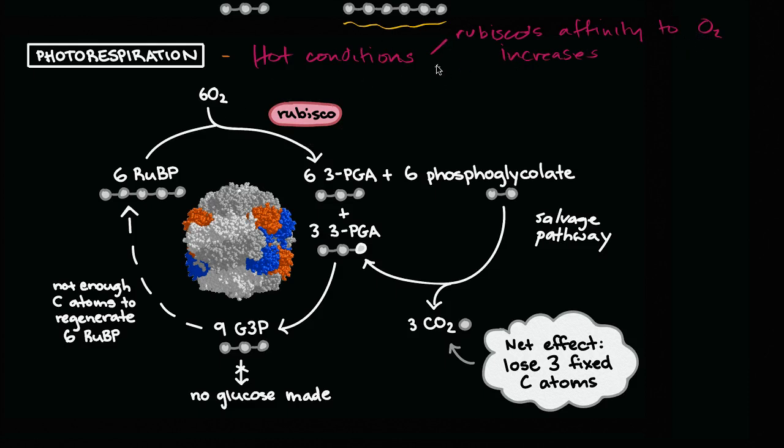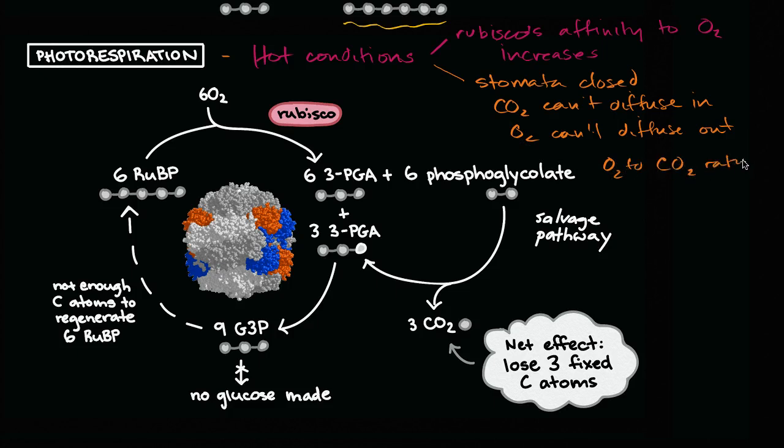And also under hot conditions, plants are worried about conserving water. And so they will close their stomata. Stomata closed to preserve water. But when the stomata are closed, you have CO2 can't diffuse in, and O2 can't diffuse out. So your ratio of O2 to CO2 increases. So O2 to CO2 ratio increases. So under hot weather, the Rubisco just wants to work with the oxygen more. It typically wants to work with the carbon dioxide. And also, because the stomata is closed and you don't have as easy diffusion, this ratio is going to increase. And so things are just more likely to react with the oxygen. Especially the Rubisco is more likely to bump into it in the right way than it is with the carbon dioxide.